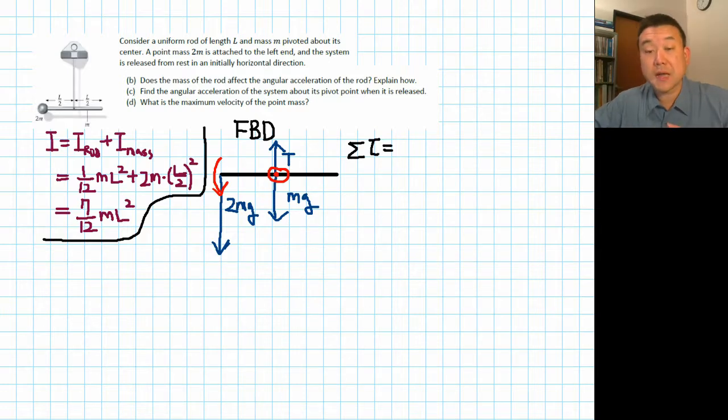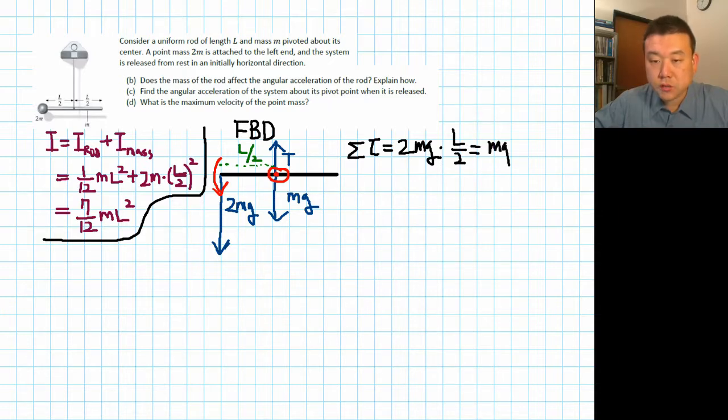Net torque is going to be the torque due to the 2M. So it's a force times the lever arm. The lever arm is the perpendicular distance from the point to the pivot. That is just going to be L/2 as in the figure. So the torque generated from that force would be 2mg times the lever arm L/2, which equals MgL. And that's it.